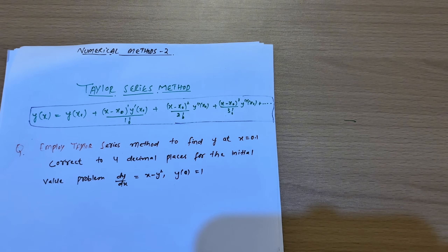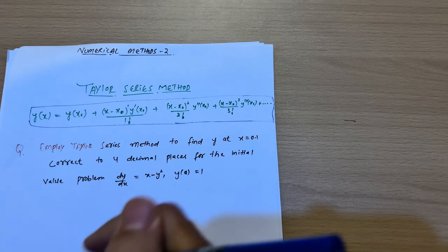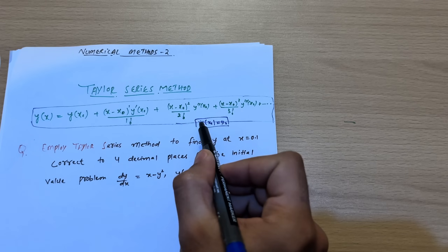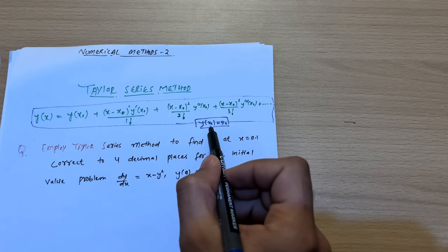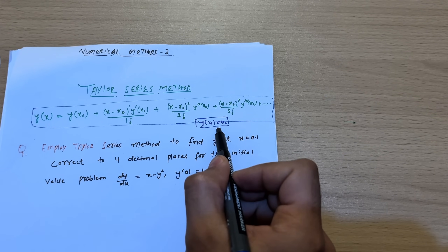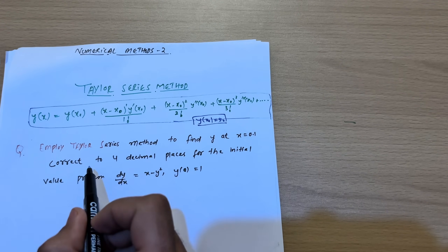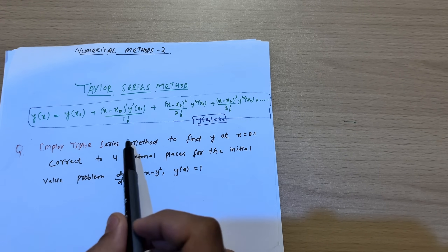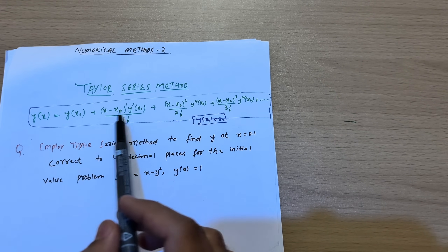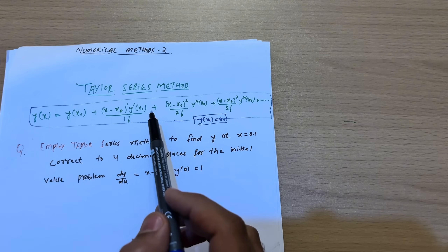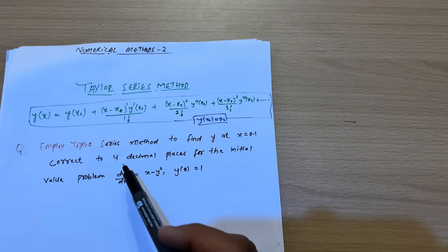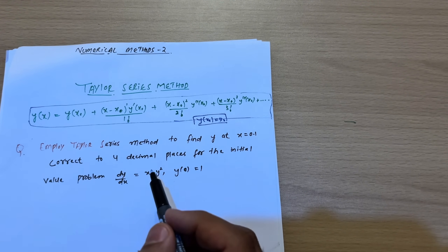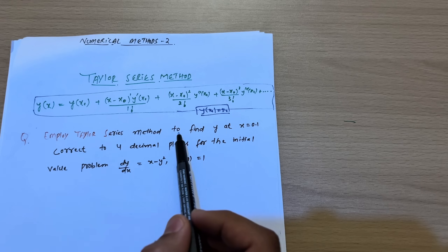In the Taylor series method, always remember that there will be an initial condition given. In general, y(x₀) = y₀ is the initial condition — it will be given in each and every problem. We'll solve one problem so you clearly understand the Taylor series method. We'll rewrite the formula in the problem so you understand how it works.